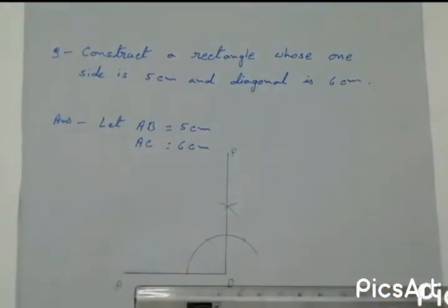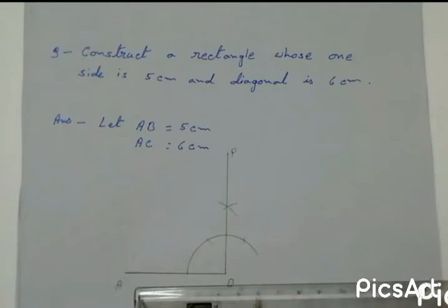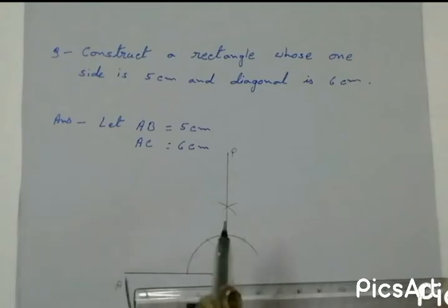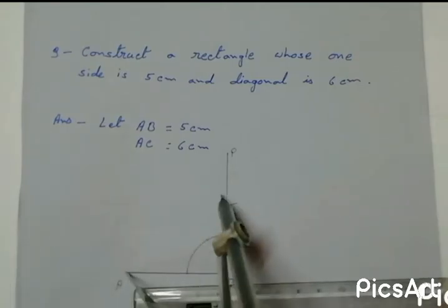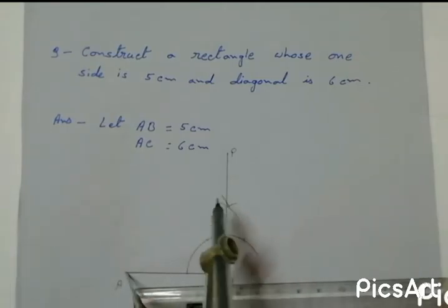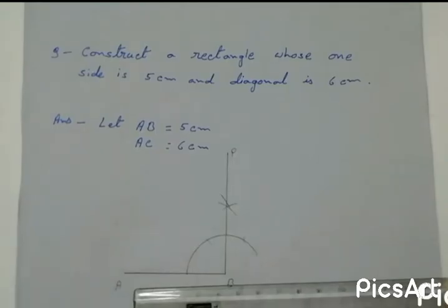And now taking 6 cm and taking A as a center, I draw an arc on the line PB. This is the diagonal.